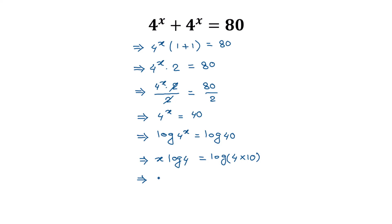So x times log 4 is equal to log of 4 times 10. According to the logarithm product rule, log(a × b) = log a + log b, this becomes log 4 plus log 10. The value of log 10 is equal to 1, so we can write x times log 4 is equal to log 4 plus 1.